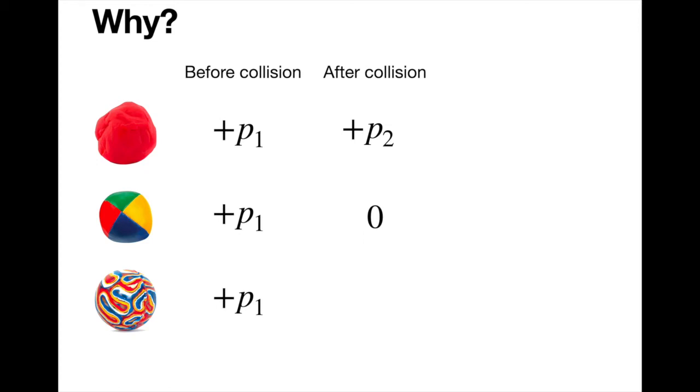But the bouncy ball bounces back, so if we assume that it bounces back at the same speed that you threw it with, the sort of ideal bouncy ball, it would bounce back with a momentum of negative P1. So what's important is the change in momentum for these balls, because whatever change in momentum they experience, the door is going to have a change of momentum with the same magnitude but in the opposite direction.